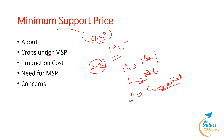There are three kinds of production costs. The CACP projects three kinds of production costs for every crop both at state and all-India average levels: A2, A2 plus FL, and C2.